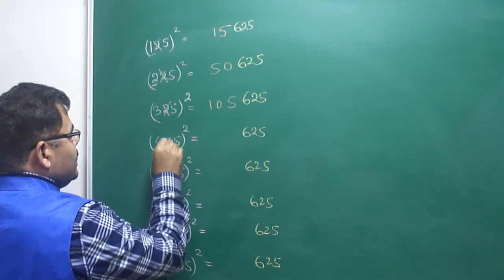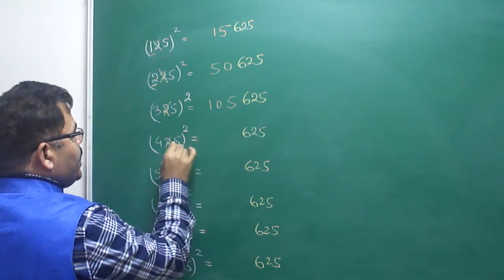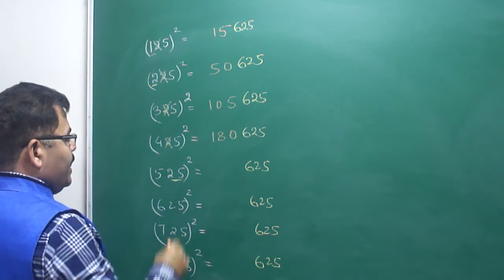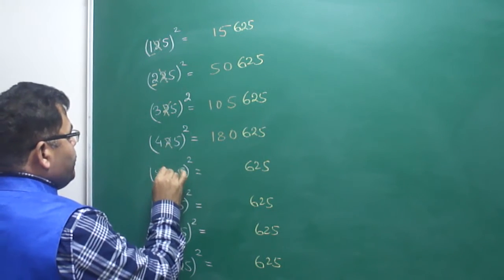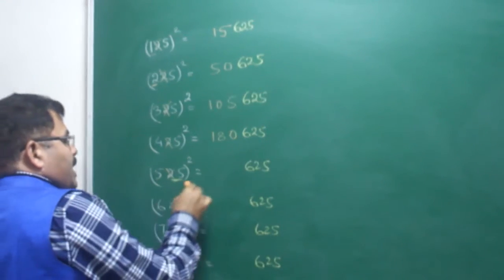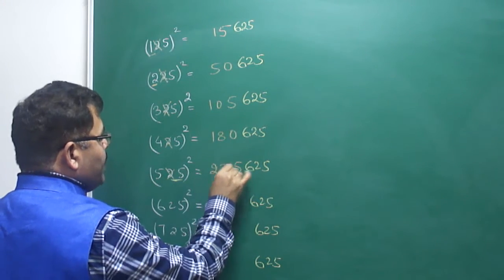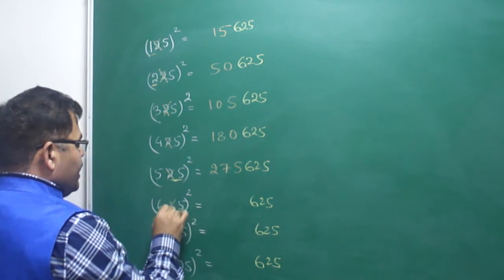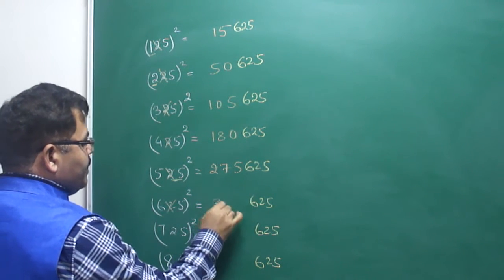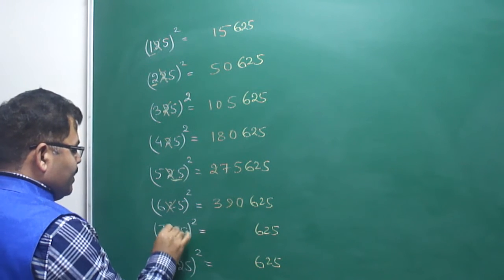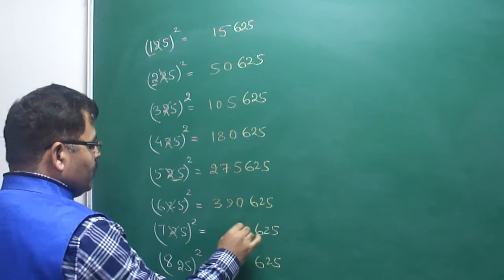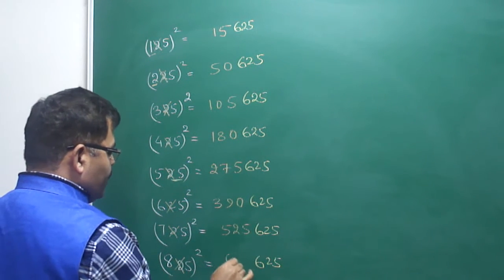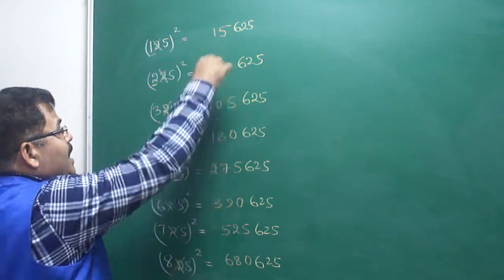Similarly, for 425 it is 45 × 4 = 180, giving 180625. For 525, it is 55 × 5 = 275 (since 55×5 = 275), giving 275625. For 625, it is 65 × 6 = 390, giving 390625. For 725, it is 75 × 7 = 525, giving 525625. And 85 × 8 = 680, giving 680625.